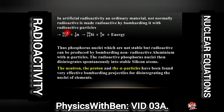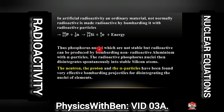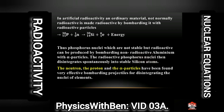This phosphorus atom was bombarded with a neutron and a new atom was formed, then a beta particle was released plus energy. Phosphorus nuclei, which are not stable but radioactive, can be produced by bombarding non-radioactive aluminum with alpha particles. The radioactive phosphorus nuclei then disintegrate spontaneously into a stable silicon atom.